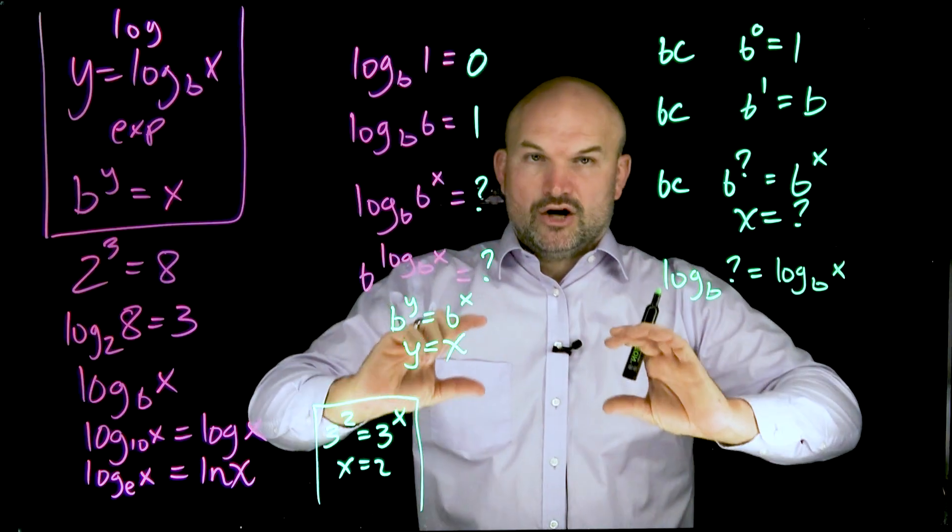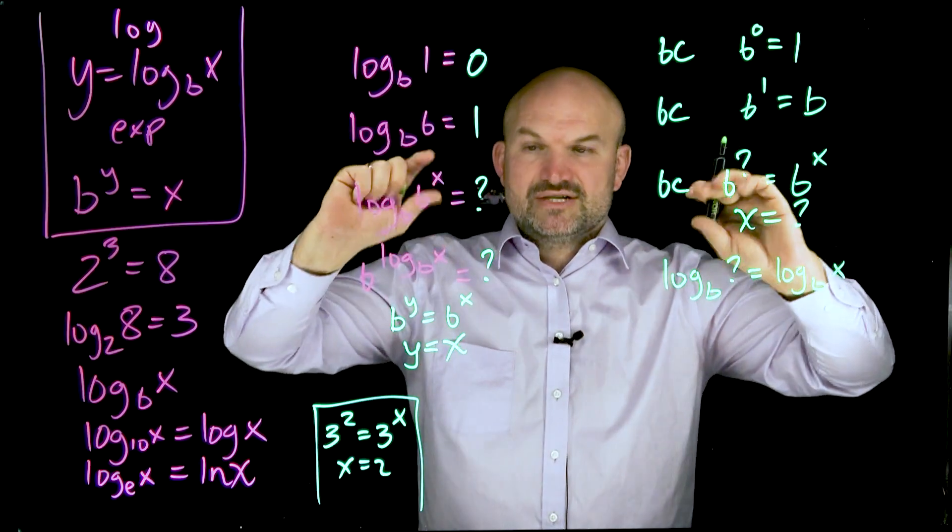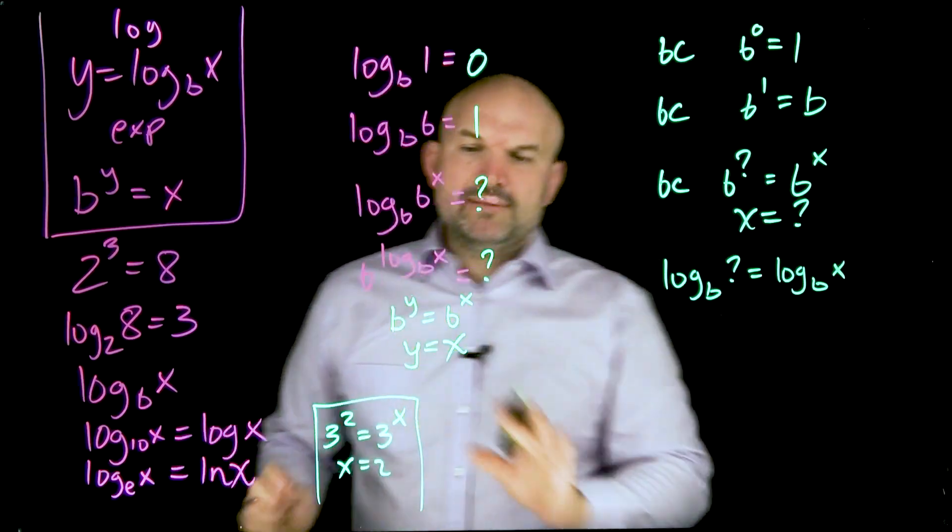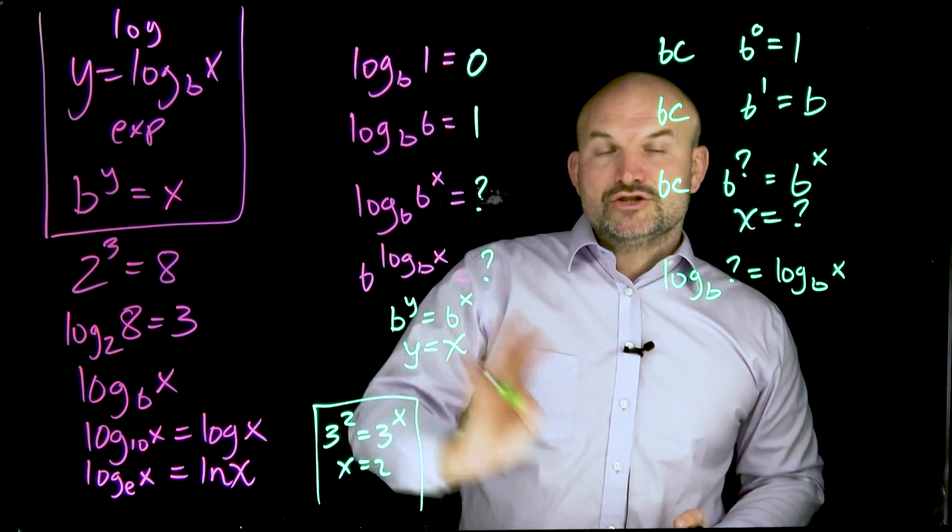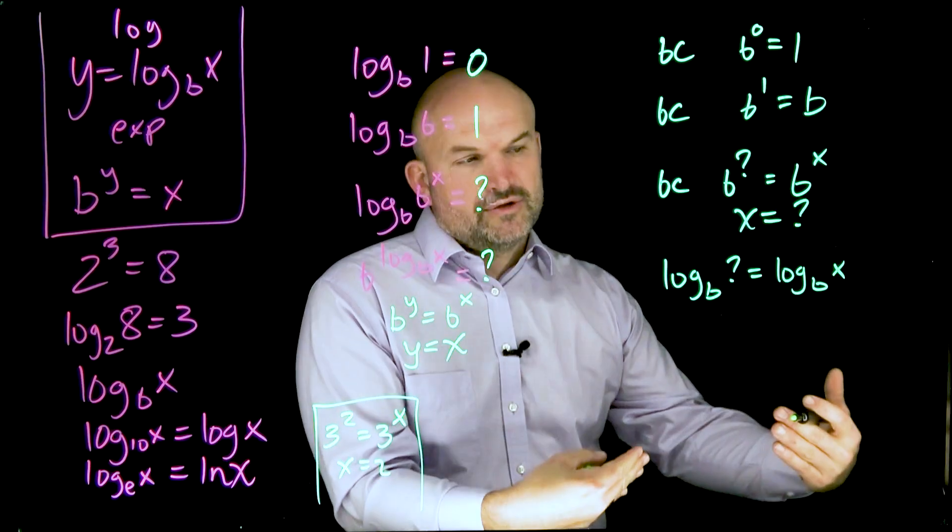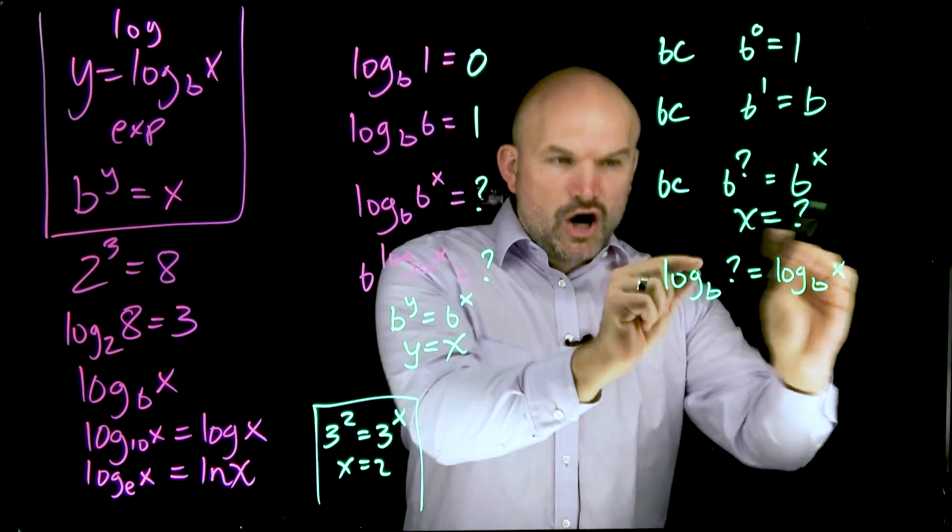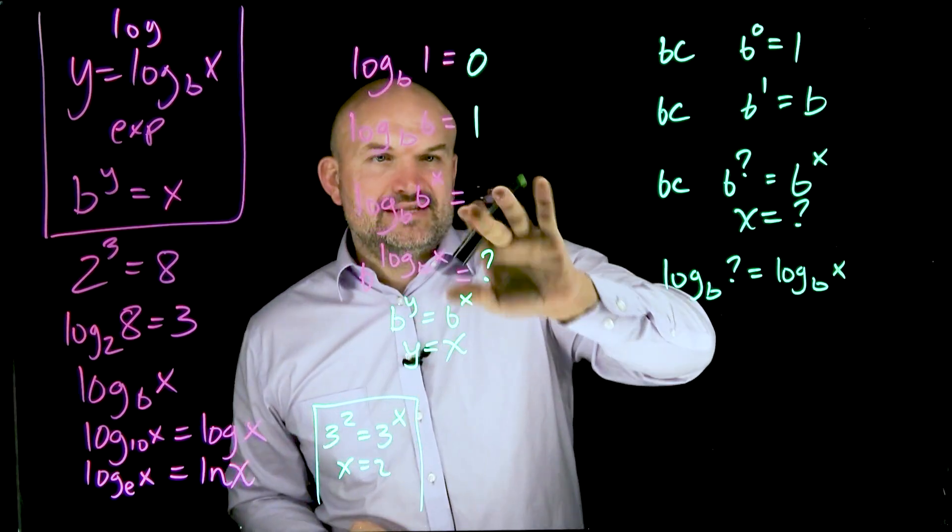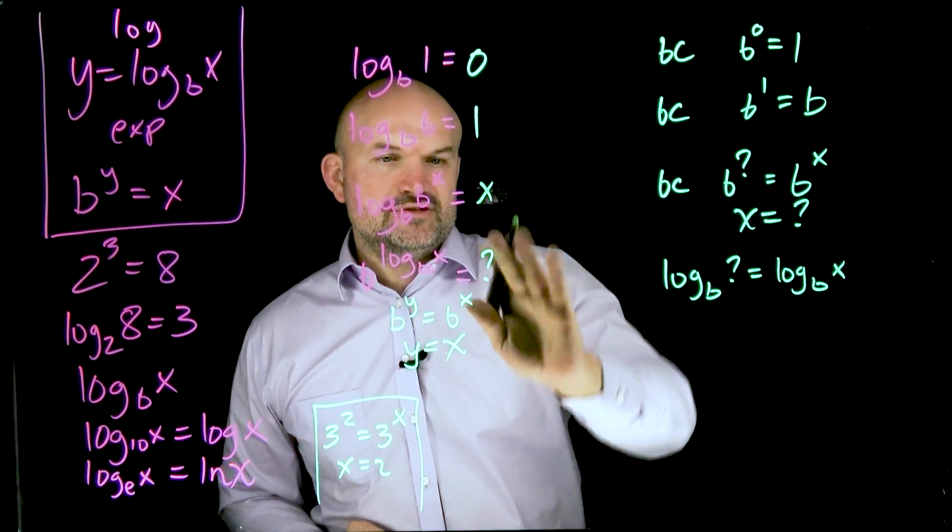Now, this looks something very similar to what we had over here. This is what we call that one-to-one property. If you have the same bases raised to different powers, their powers have to equal each other. Well, guess what? The one-to-one property for exponents is also true for logarithms. If you have two logarithms with the same base, their arguments have to be the same. So this answer is going to be x. And this answer in here is going to be x. So question mark has to equal x.